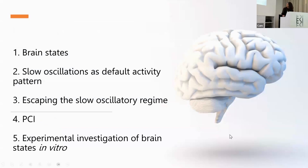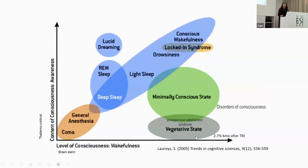These are the points I want to discuss. First, I will tell you about brain states. I like to use this schematic by Steven Loris, who works in consciousness, especially with patients with disorders of consciousness. This representation has axes for wakefulness and awareness, wakefulness being having the eyes open. You can see states here, some of them physiological, such as deep sleep, REM sleep, drowsiness, consciousness, and wakefulness.